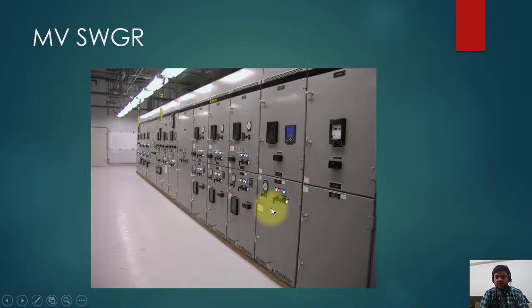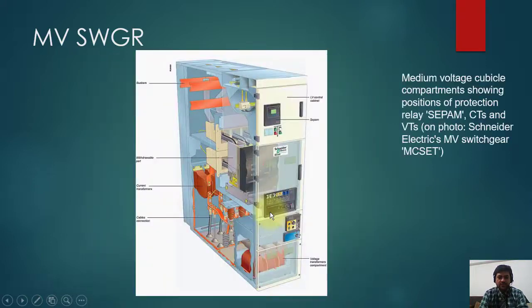Racked out means it is outside and it is physically separated from the main circuit. So if you want to do some maintenance, you can do it. Here this is the cutout as I told you.